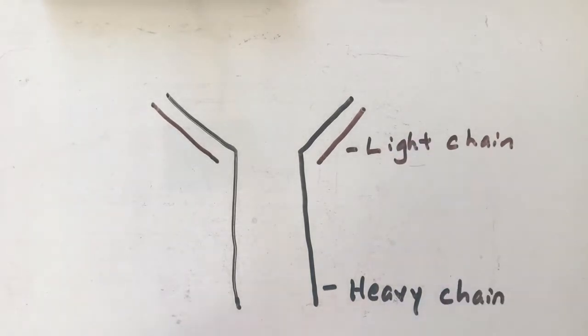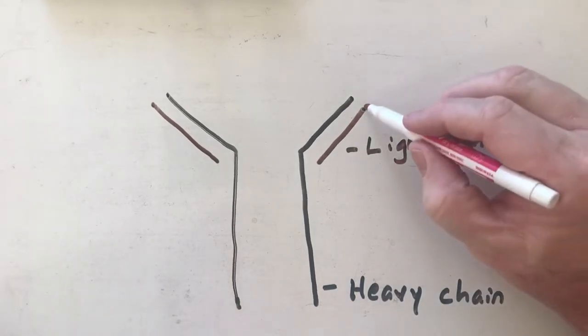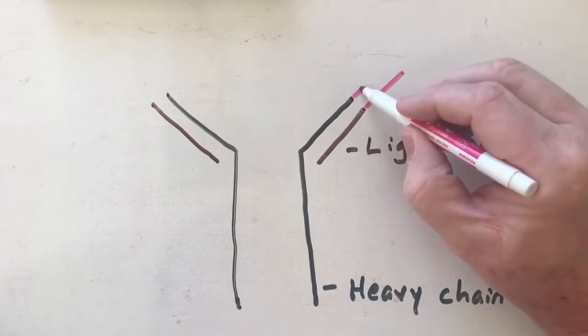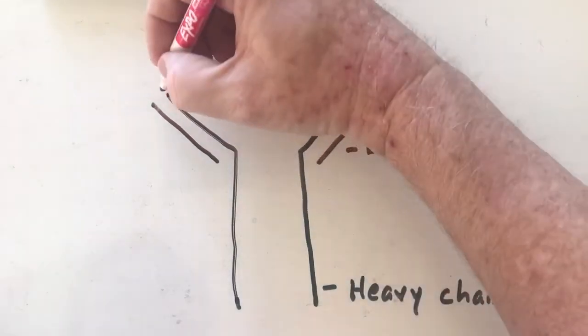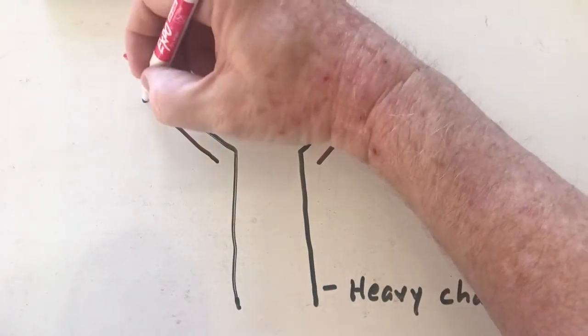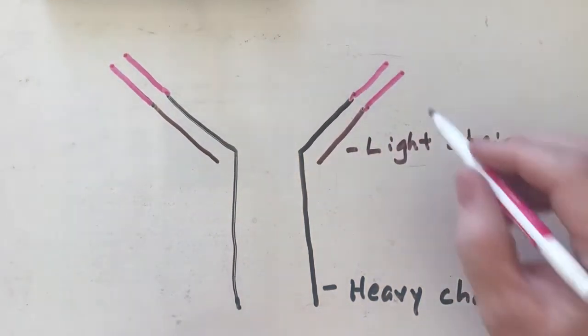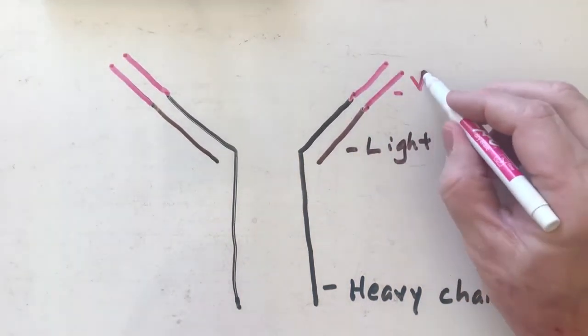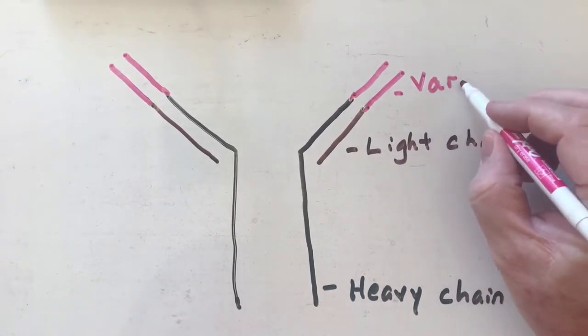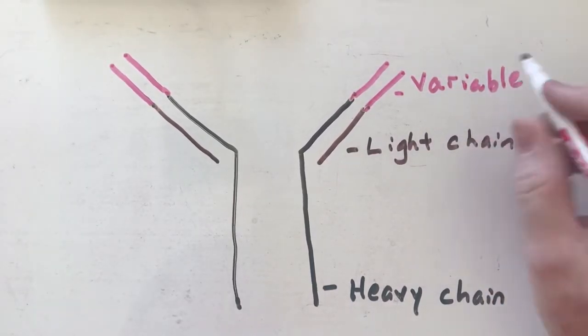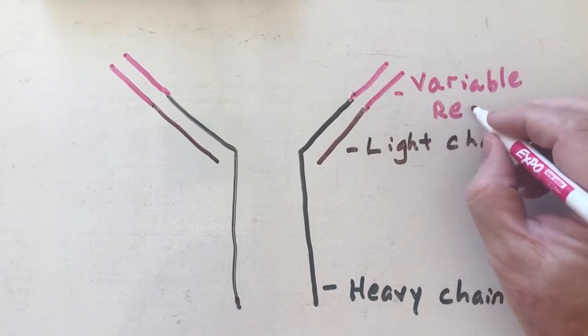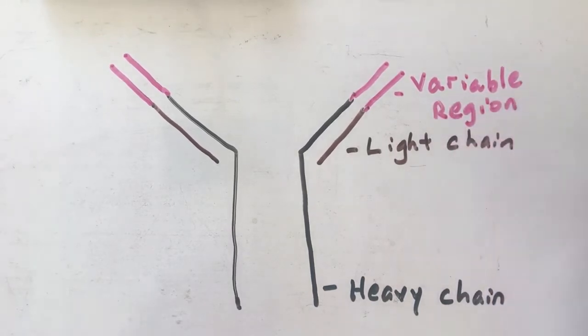At the end of these chains, you actually have something called a variable region. They're actually connected—I'm making it look like they're not, but they're connected. The reason it's called the variable region is because it's able to basically adapt or change so that it can attach to antigens.